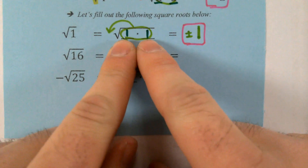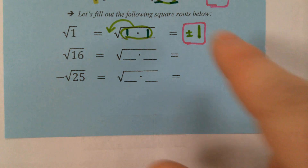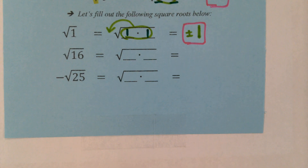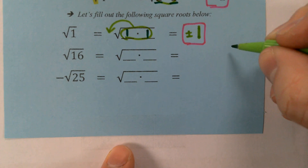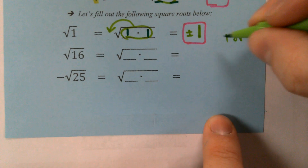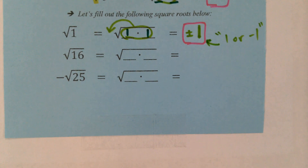We could have easily broken this up into negative 1 times negative 1 and pulled out negative 1 as our answer. Because there are two possibilities for a correct answer here, we have to include them both. And this plus or minus sign, although a little confusing at first, is a lot easier than writing 'the answer is 1 or negative 1.' Technically that's not wrong — positive 1 or negative 1 — but we can simplify it with the plus or minus sign.